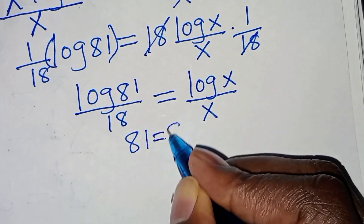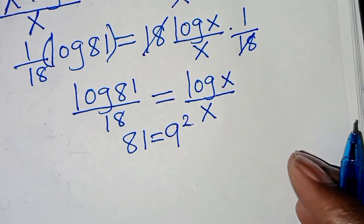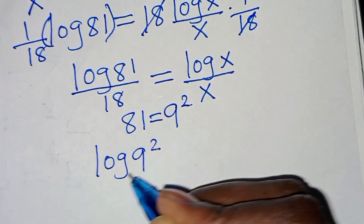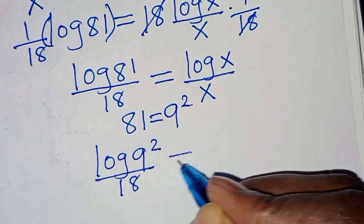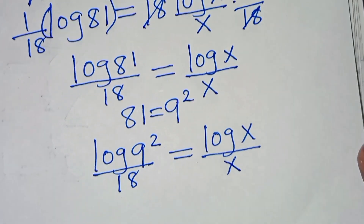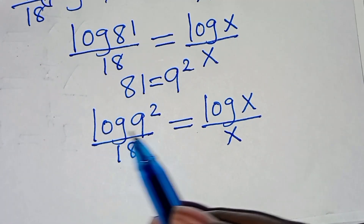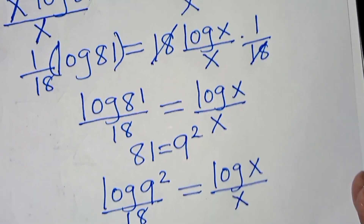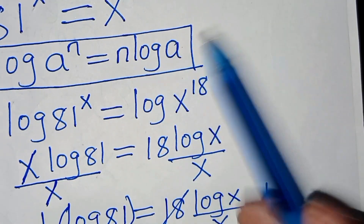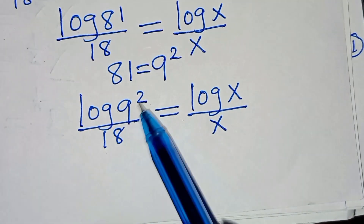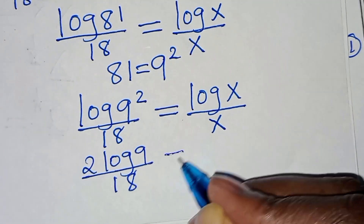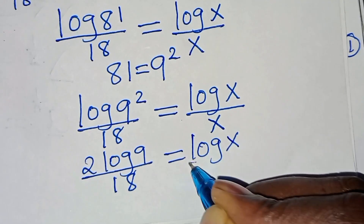Now we can express 81 as 9 to the power 2. Substituting this, we have log of 9 to the power 2, all over 18, equals log x divided by x. Applying the power property of logarithms — log a to the power n equals n log a — we have 2 log 9 divided by 18, which equals log x divided by x.